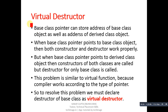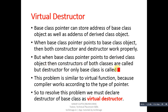A base class pointer can store the address of a base class object as well as a derived class object. When a base class pointer points to a base class object, both constructor and destructor work properly. But when a base class pointer points to a derived class object, constructors of both classes are called, but the destructor for only the base class is called — and this is a problem.